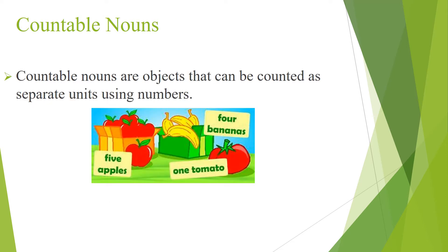Countable nouns are objects that can be counted as separate units using numbers. For example, five apples, one tomato, four bananas.